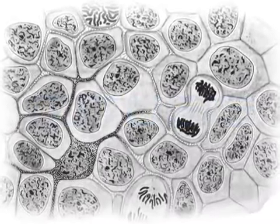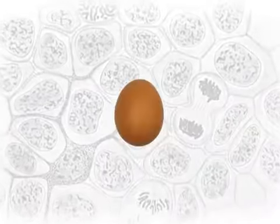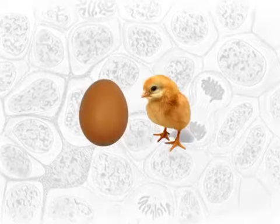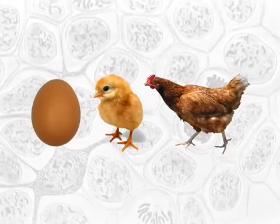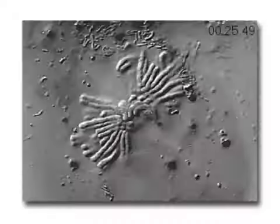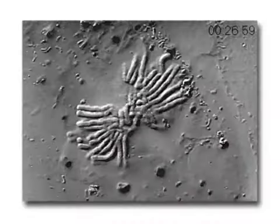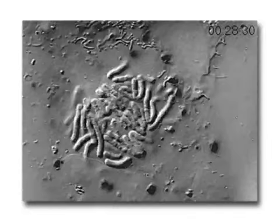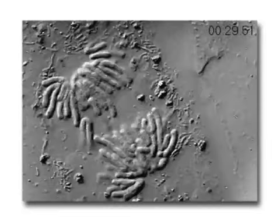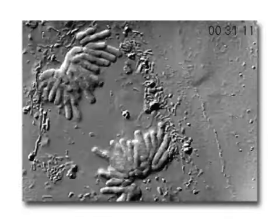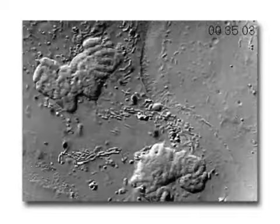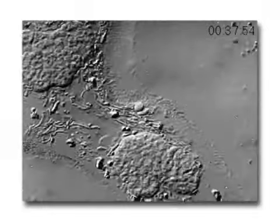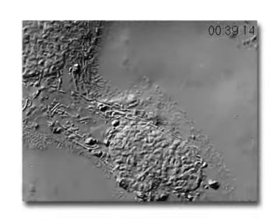Cell division is required for an organism to grow, mature, and maintain tissues. During the mitotic phase, a cell will undergo mitosis to form two new nuclei, and then divide to form two new individual cells during cytokinesis.